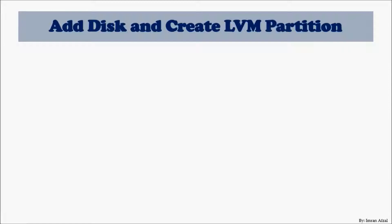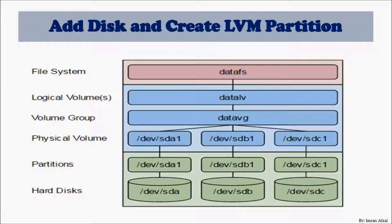Looking at this picture, at the bottom you will see we have hard disk one (sda), hard disk two, hard disk three. For every hard disk we create a partition on top of it. If you are doing LVM on top of it, you would have to create a physical volume — a physical volume has to be created for each partition — then we create a volume group.